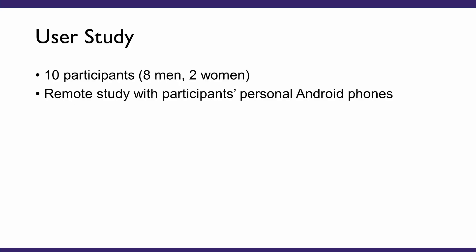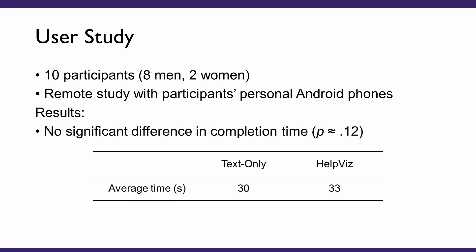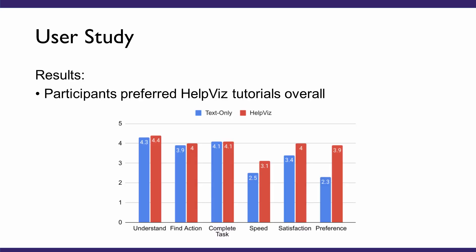We conducted studies with 10 participants to investigate how mobile users receive visual tutorials generated by HelpBiz in comparison with the original text instructions. Our remote study showed that, although participants spent about the same amount of time using each technique, participants showed overall preference for the context-aware visual tutorials generated by HelpBiz. Especially, participants found the automatically generated thumbnails and screenshots to be helpful, and many were pleasantly surprised when the HelpBiz tutorials automatically advanced to their current steps.